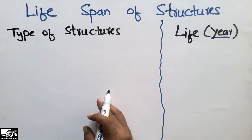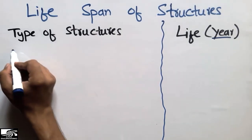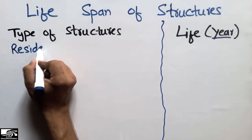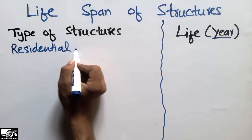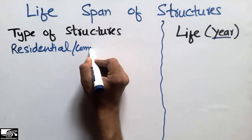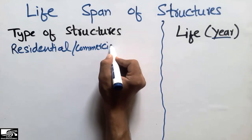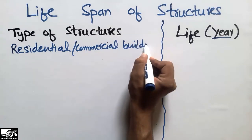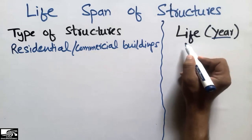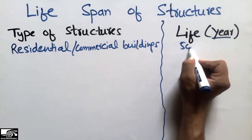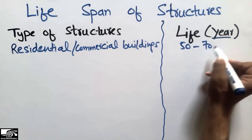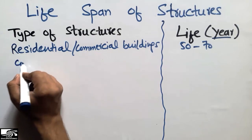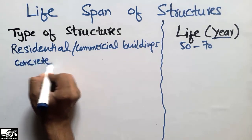The first structure is residential and commercial buildings. They have a lifespan of almost 50 to 70 years. The second one is concrete pavements, also known as rigid pavements.